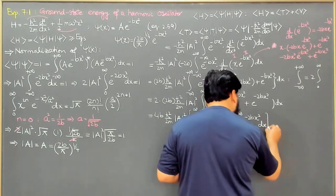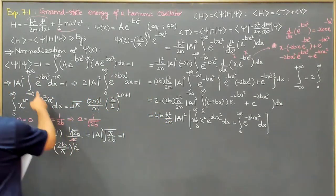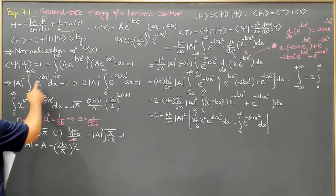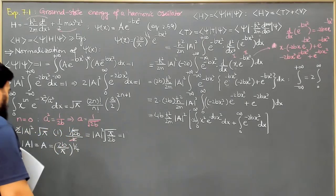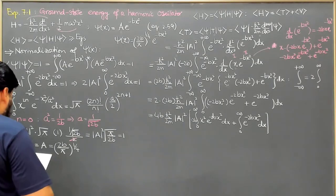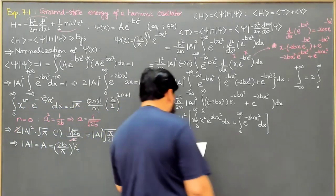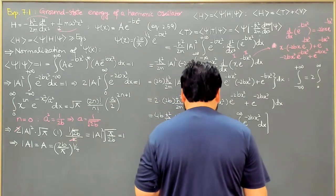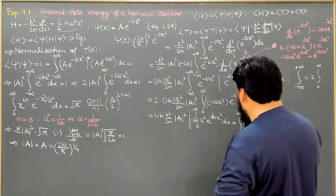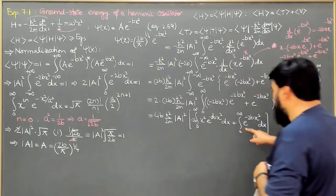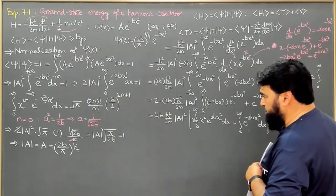Now for this second integral, we have already calculated e^(minus 2bx²). Here n is 0 and a is 1/(2b), and its solution comes out to be √(π/2b). So I have this 4b · ℏ² over 2m, and the solution for this integral, since 2 was taken earlier from 0 to infinity, this is √(π/2b). So the value of this one was √(π/2b).